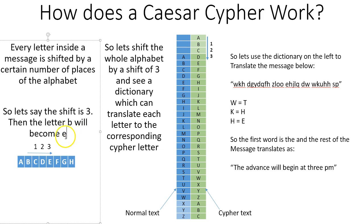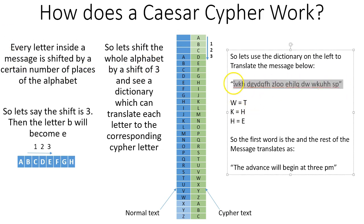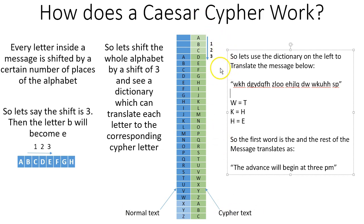With shift 3, b becomes e. And as you can see here, c becomes f, k becomes n, and so on. So back to the gibberish message from the last page which is written right here. If we just start looking at this normal translation to ciphertext, the ciphertext has this shift of 3.